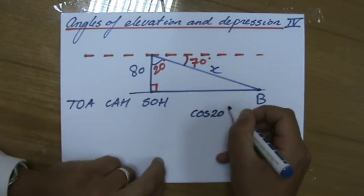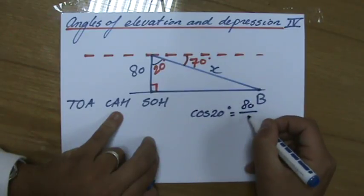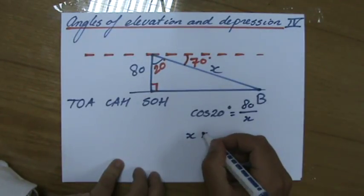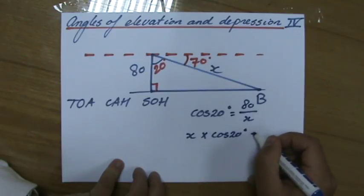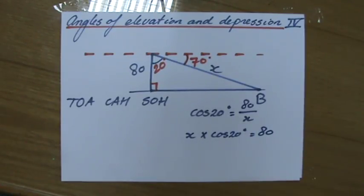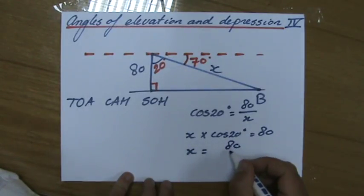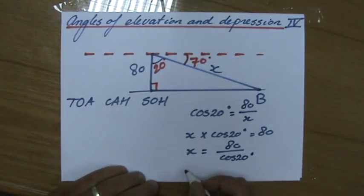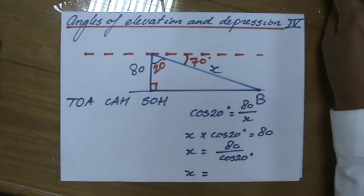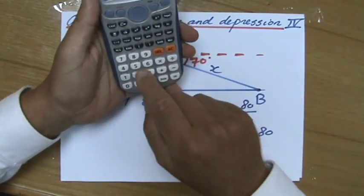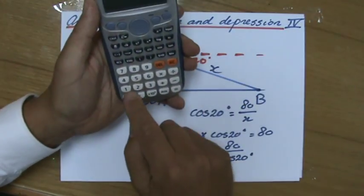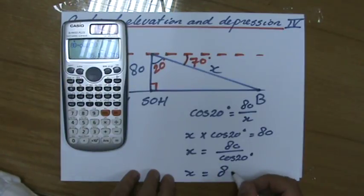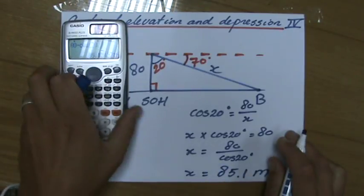Cosine of 20 degrees equals the adjacent over the hypotenuse, which is 80 over x. My unknown is in the denominator, so I have to do one extra step rearranging it. Times both sides by x, then divide both sides by the cosine of 20 degrees. So x equals 80 divided by cosine of 20, which equals 85.1 meters.